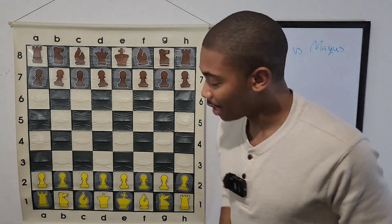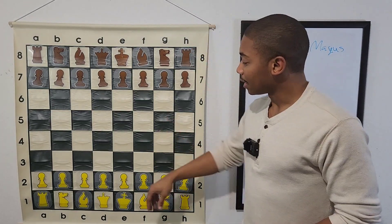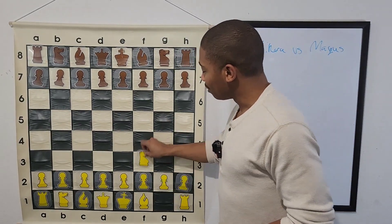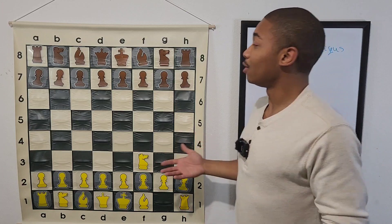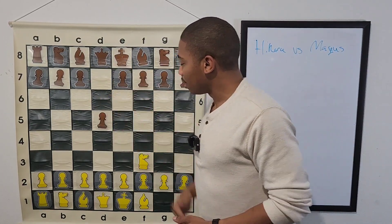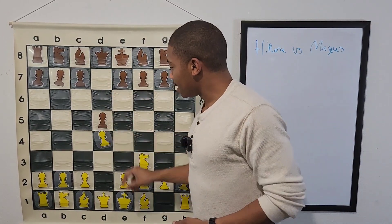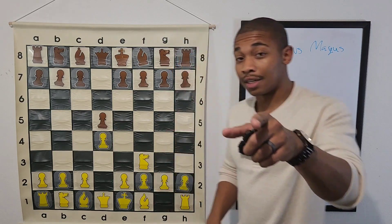Hikaru Nakamura had the white pieces in this game, and this was a five-minute, one-second increment, and he played the move Knight F3 because he's Hikaru Nakamura. He can play any move that he wants to, and then his opponent Magnus Carlsen played D5 and D4, and the game just started.